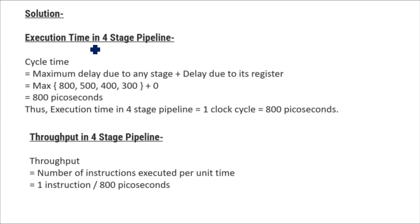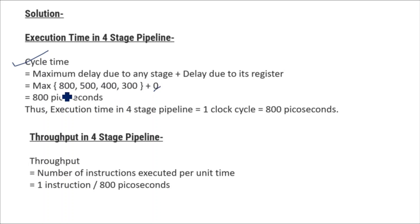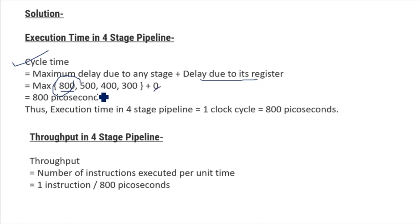So first we will calculate the execution time in the four-stage pipeline. How do we calculate the execution time? First we will calculate the cycle time. Cycle time equals the maximum delay due to any stage plus the delay due to its register. Since our question is not telling us anything about the register delay, we will put 0 here. The delays are 800, 500, 400, and 300 picoseconds, so the maximum delay is 800. Thus cycle time equals 800 plus 0, which is 800 picoseconds.